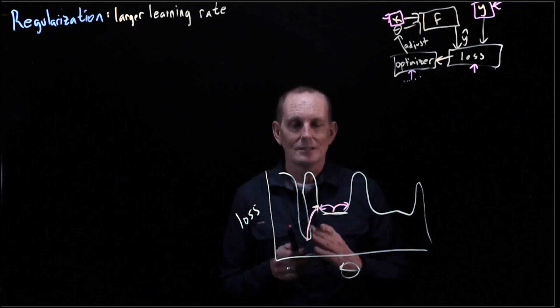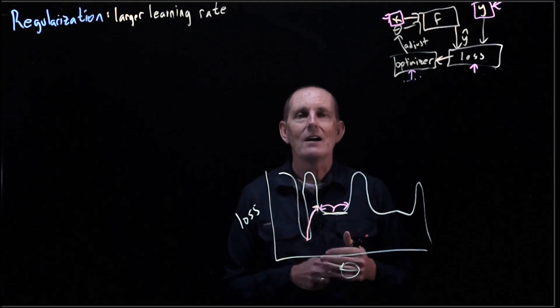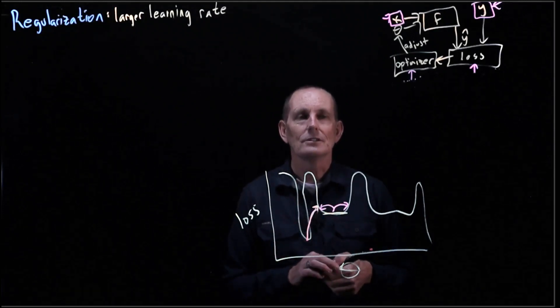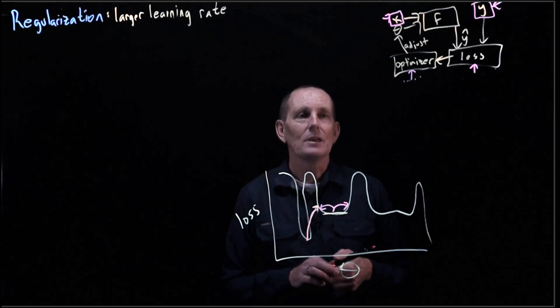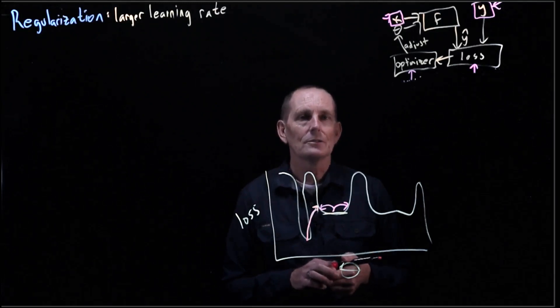The problem with large learning rates is something like this. We may have an underfitting situation in the sense that the training loss may be higher than it could otherwise be.